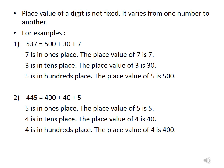So, as 7 is in 1's place, the place value of 7 becomes 7. 3 is in 10's place. The place value of 3 is 30. 5 is in 100's place. So, the place value of 5 becomes 500. Now, let us see another example.